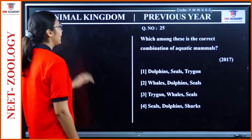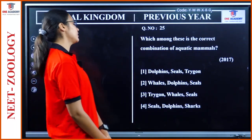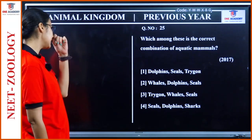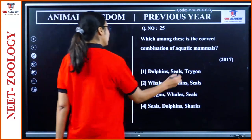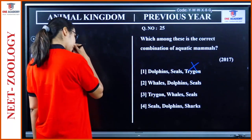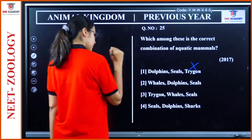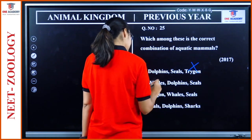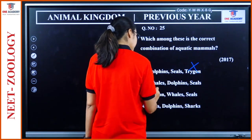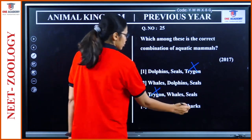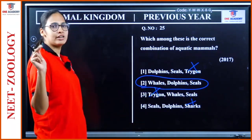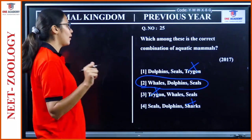Question 25: 'Which is the correct combination of aquatic mammals?' Trygon is not a mammal. Shark is not a mammal. Whale, dolphin, and seal are aquatic mammals. Option 2 is correct.